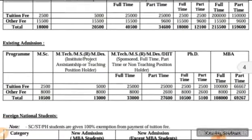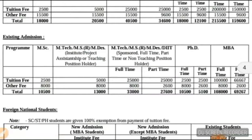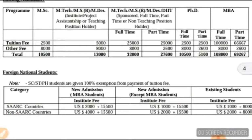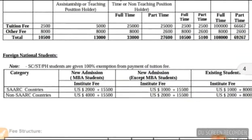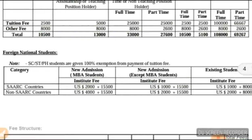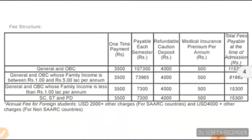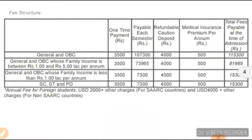Existing Admissions. Foreign National Students. Category: New Admissions — MBA Students. Total Fees for National Students. Journal and OVC: One Time Payment and Payable Each Semester. Refundable Caution Deposit and other fees — you can see here.